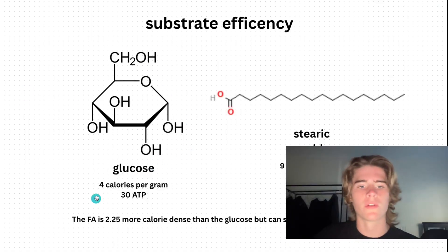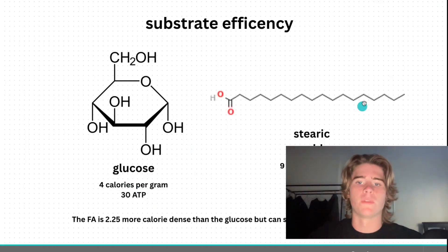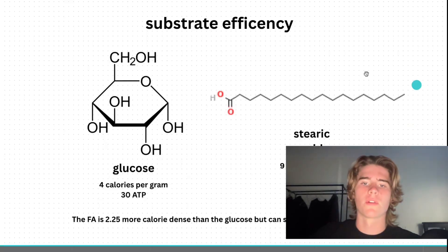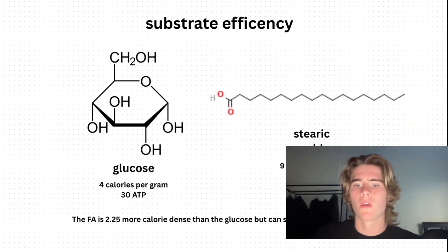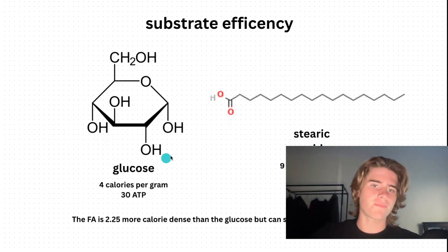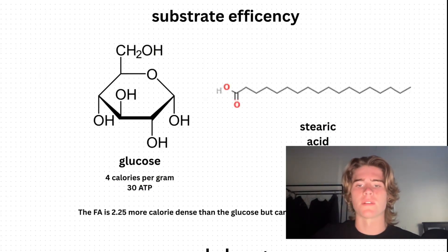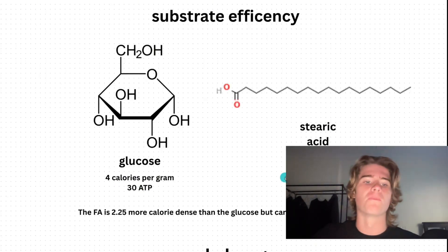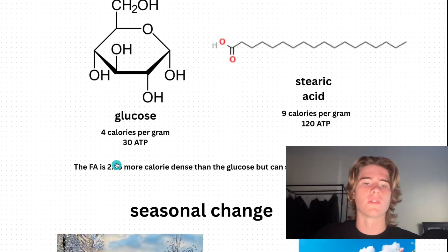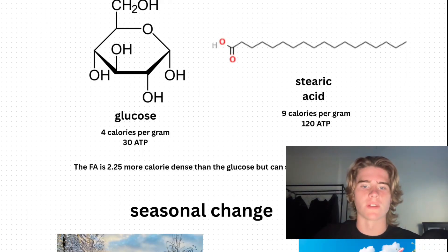This is a glucose molecule. Glucose has four calories per gram. This is a stearic acid molecule — a saturated fatty acid — and it has nine calories per gram. But glucose, when metabolized through glycolysis, will only produce 30 ATP, unlike stearic acid which produces 120 ATP. So the fatty acid is 2.25 times more calorie-dense than glucose but can synthesize four times the ATP. This alone proves that calories are not relevant to how we process food.